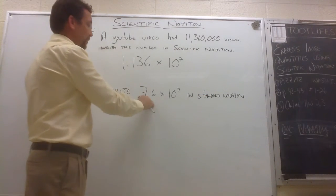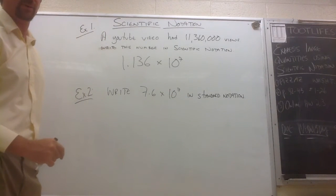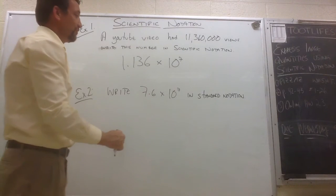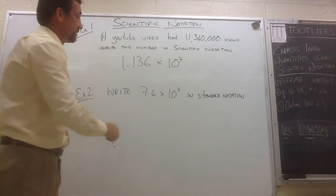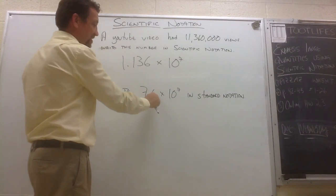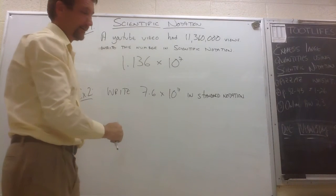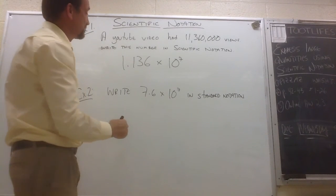So we have 7.6 times 10 to the 7th. To write that number in standard notation, I'm going to move my decimal 7 places to the right. 7.6 times 10 to the 7th. Well, if I move my decimal one place to the right, I run out of places. So I need to add 6 zeros as placeholders.